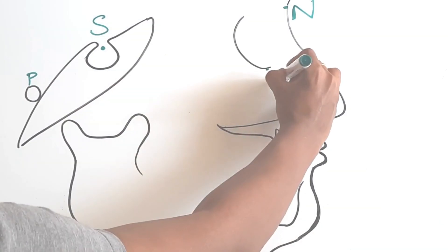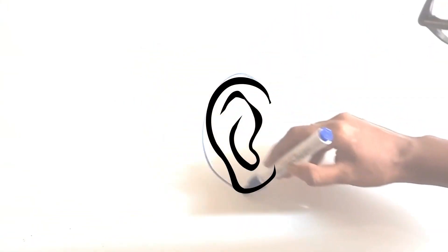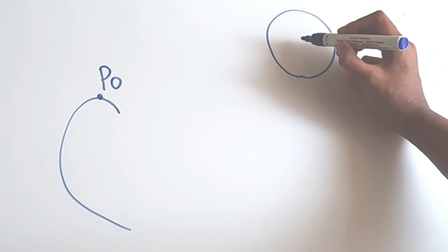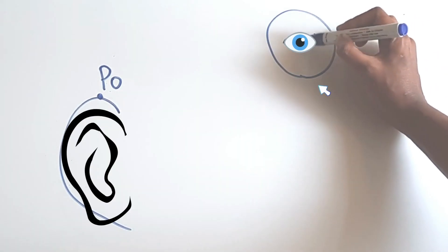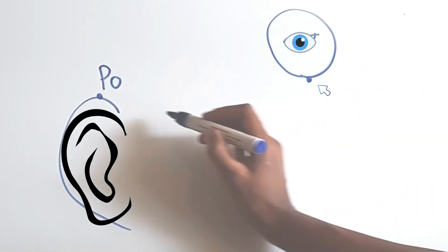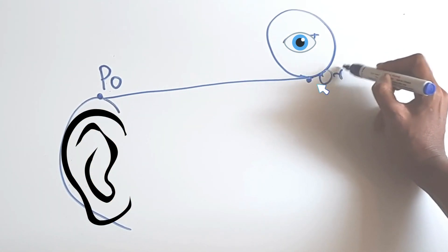Next is porion and orbital. Porion is the superior most point of the ear. Now, if this is the orbit, our eyes will be inside it. Orbital is the lowest point on the outline of orbit.